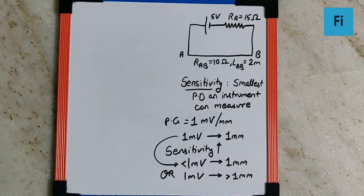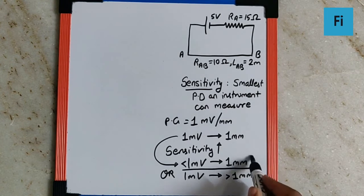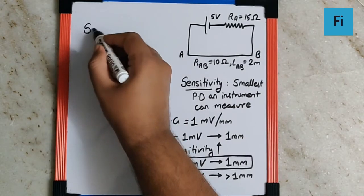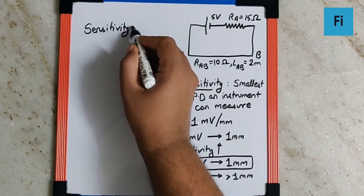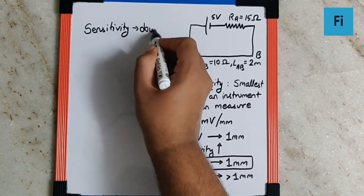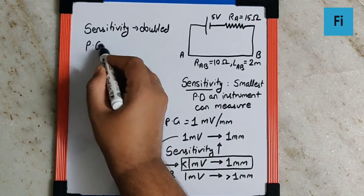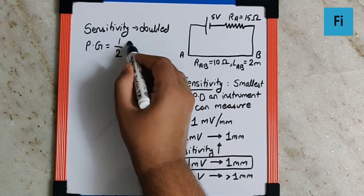Then I can say the sensitivity of that instrument has increased. So I am taking into consideration this part for solving the problem where I can say if the sensitivity is to be doubled, then the potential gradient is to be changed from 1 millivolt per millimeter to half millivolt per millimeter.